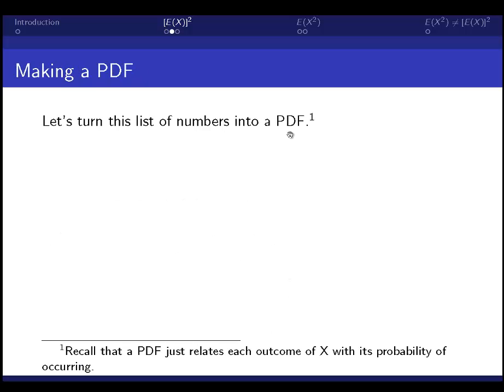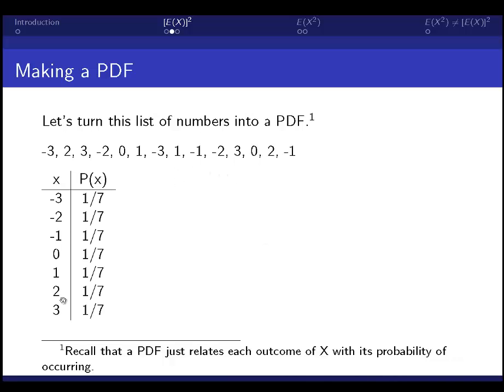Let's turn this list of numbers into a PDF. Recall that a PDF just takes each one of the outcomes of x and relates it with its probability of occurring. So there are the numbers, and there are their probabilities. Notice there's two of every number. They're equally likely to occur. And I've just organized them here so that they are in numerical order.